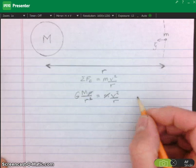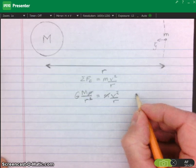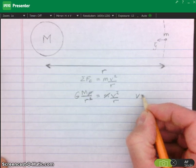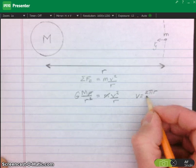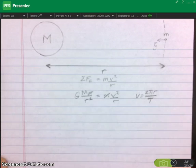However, we want to define the period. The V in orbit is equal to 2 pi times the radius or the circumference around the orbit divided by the period. So I'm going to substitute that in.